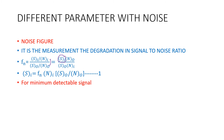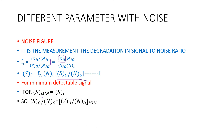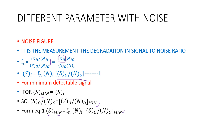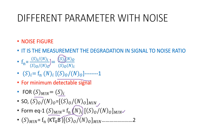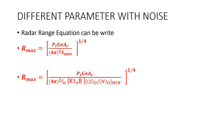From the minimum detectable signal perspective, Si becomes S_min, and the output ratio also becomes the minimum. Substituting into equation 1, we get S_min = Fn × Ni × (So/No)_min. This is equation number 2 of the minimum detectable signal. The radar range equation can also be written in this form by substituting the value of S_min into the radar range equation to represent R_max.